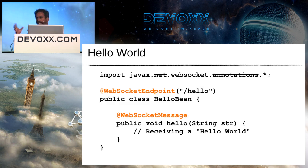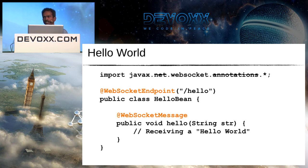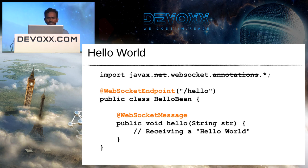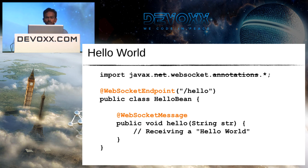In the annotation-driven model, you take a POJO and decorate it with annotations — similar to how annotating with @Stateless creates a stateless EJB, or @WebService creates a SOAP endpoint. Here, a HelloBean POJO annotated with @WebSocketEndpoint at path slash-hello becomes a WebSocket endpoint listening for requests at that path. To receive messages, annotate methods with @WebSocketMessage — these act as onmessage event handlers. When a message arrives, the runtime maps it to the method and invokes it.